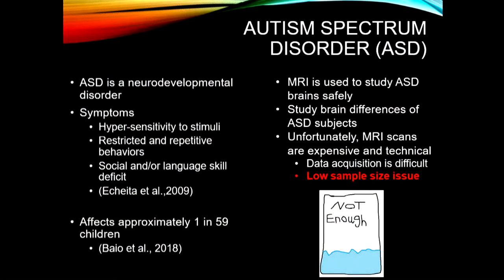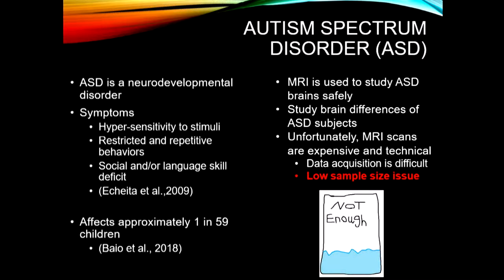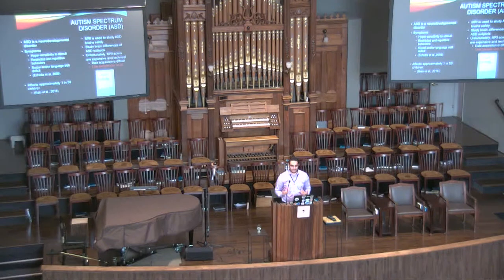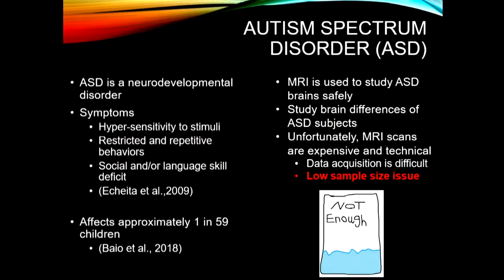ASD, also known as Autism Spectrum Disorder, as I mentioned, is a neurodevelopmental disorder. It's something that the patient has and is stuck with them for the rest of their lives, and it's commonly characterized by the following symptoms: hypersensitivity to stimuli — whether it be light, sound, or a lot of people around — they're just able to feel them a little bit more. They also have restricted and repetitive behavior, so they tend to follow the same routine over and over again. In some cases they also suffer from social and/or language deficit, which makes it hard to communicate with their peers and engage in the environment. It affects approximately 1 in 59 children here in the United States, so it's a fairly common neurodevelopmental disorder within the community.